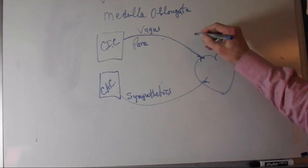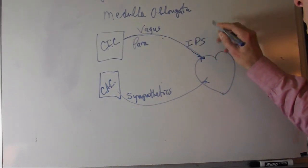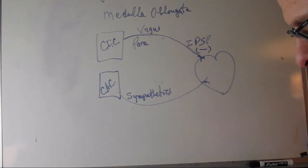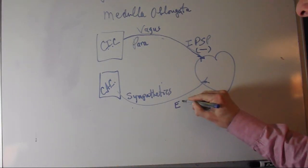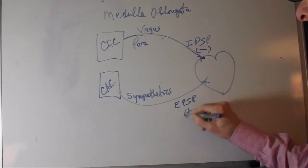The action potential is an inhibitory post-synaptic potential from the parasympathetic. The sympathetics have an excitatory post-synaptic potential to the heart.